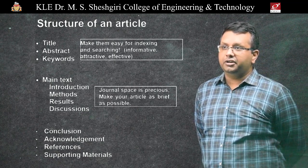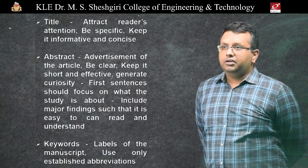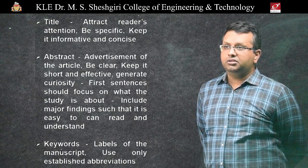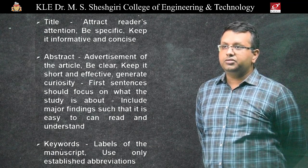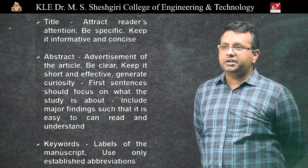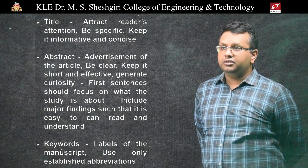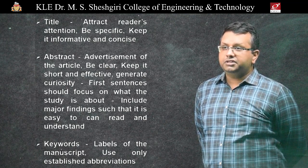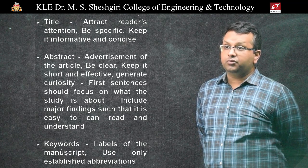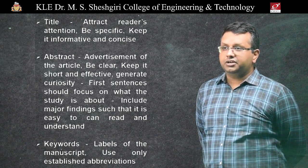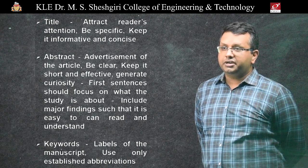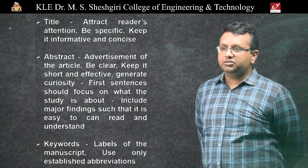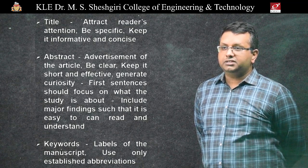Now let's look at each section in detail. In regard to the title, attract the reader's attention, be as specific as possible, and keep it informative and concise. In regard to the abstract, remember that this is an advertisement of the article — be clear, keep it short and effective, and generate curiosity. The first sentences should focus on what the study is about and the last sentences should include the major finding. Then include keywords, which are basically the labels of the manuscript — use only established abbreviations.